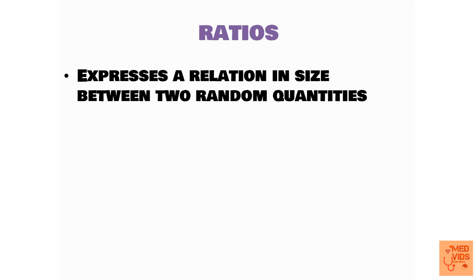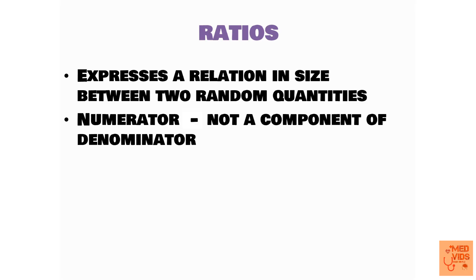Ratios express a relation in size between two random quantities. The numerator is not a component of the denominator in ratios — whereas in rates, the numerator is a component of the denominator. The numerator and denominator are entirely different things. For example, in sex ratio, we compare males to females — these two are entirely different quantities. So in a ratio, we are making a comparison out of two different quantities.